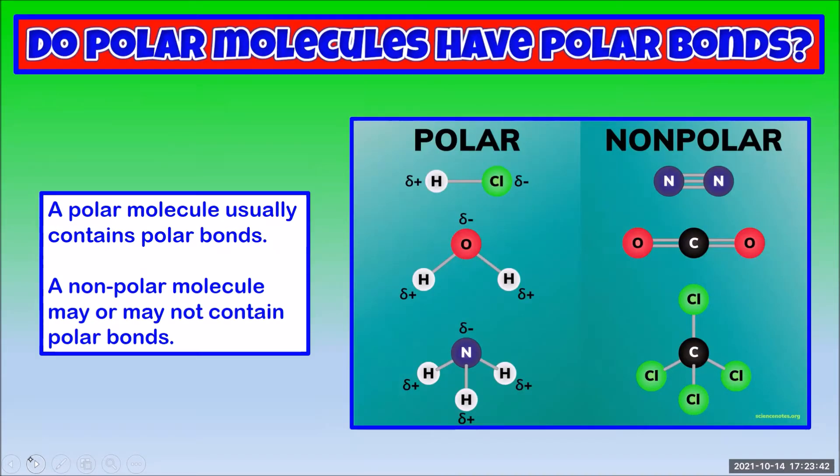A polar molecule usually contains polar bonds. There are some molecules in which the polarity is caused by a non-bonded electron pair, but usually a polar molecule has polar bonds. What this diagram is not showing you though is that some non-polar molecules also have polar bonds.